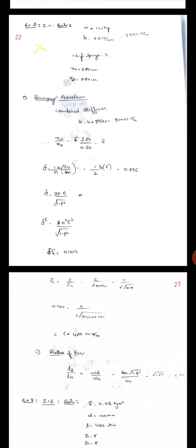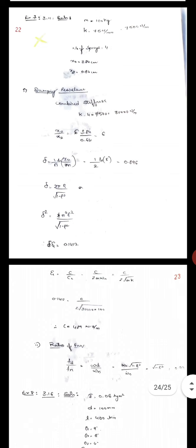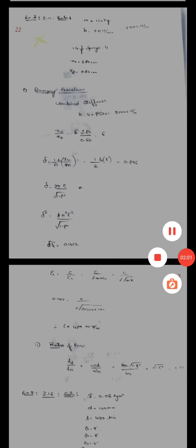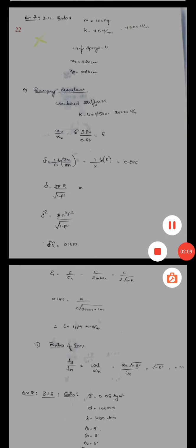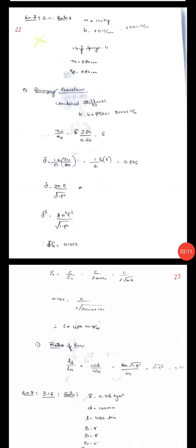Given: mass is 100 kg, stiffness for each spring is 75 Nm per mm or 7500 Nm per meter, number of springs is 4, x0 is 3.84 cm, and x2 is 0.64 cm.